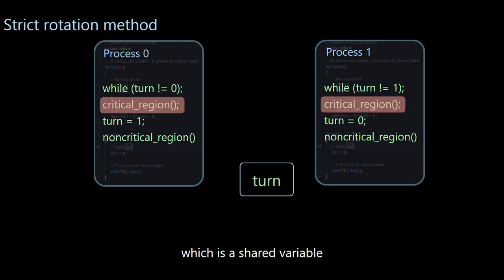There is a lock called turn, which is a shared value. For example, it is set to 0 initially. Let's look at the first line of code on the left. It doesn't matter if you don't understand the C language. I will explain it.